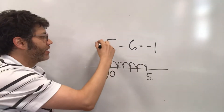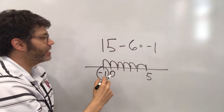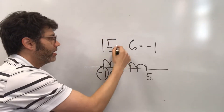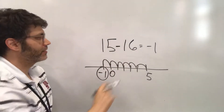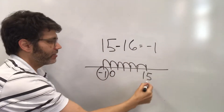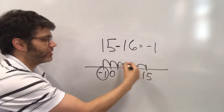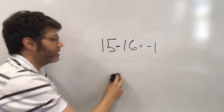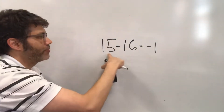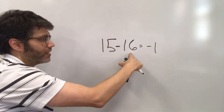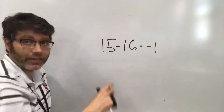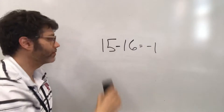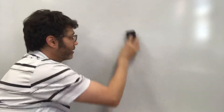Just like 15 minus 16: if we're at 15 on the number line and go 16 to the left, we'd end up at negative 1. In this case, the subtracted number overpowers the starting number because you're subtracting more than was there, so you end up in negative territory.